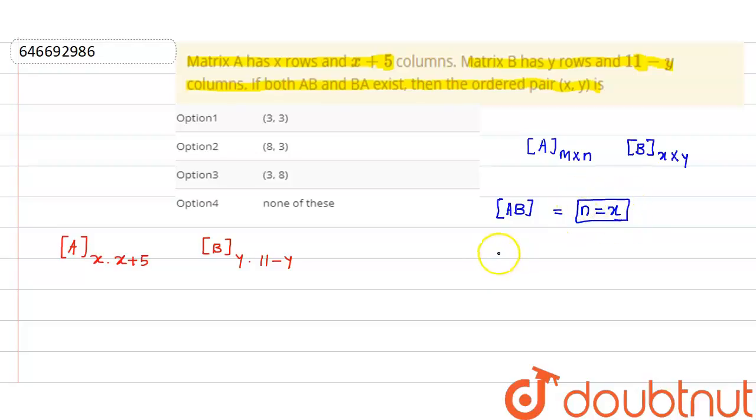Similarly, BA exists when Y is equal to M. So if I apply this property: if AB exists, it means X plus 5 equals 11 minus Y. And if BA exists, it means X equals Y.